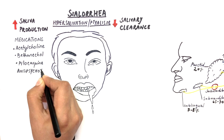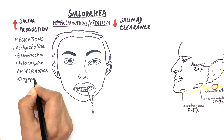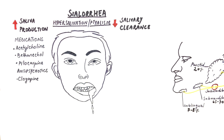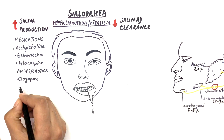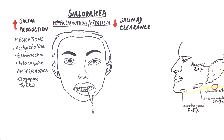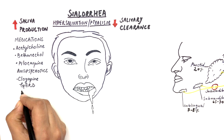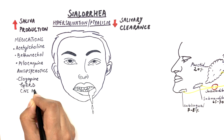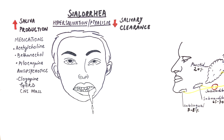Antipsychotic drugs like clozapine also have autonomic effects and may increase saliva production. GERD, or gastroesophageal reflux disease, can also stimulate saliva production — this is a protective buffering response to acids encountered in the oral cavity. Any mass present in the CNS can also stimulate saliva production.